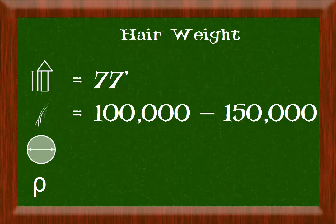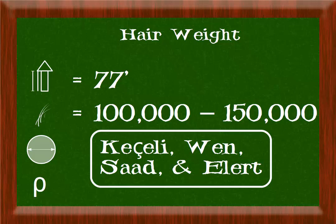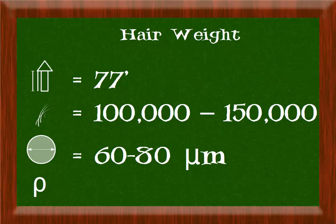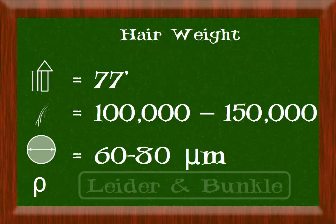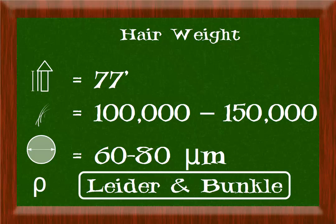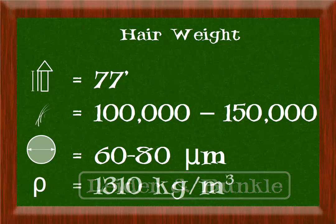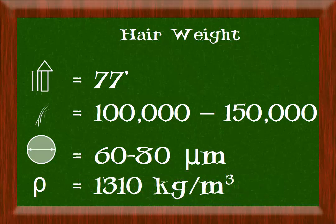The diameter of hair can also vary widely and depends on hair color. One study by Kaisley, Wen, Saad, and Elbert found the average hair to have a diameter between 60 and 80 micrometers. Lastly, a study by Leder and Bunkle found that the density of hair is 1.31 times that of water, putting it at just over 1,300 kilograms per meter cubed.